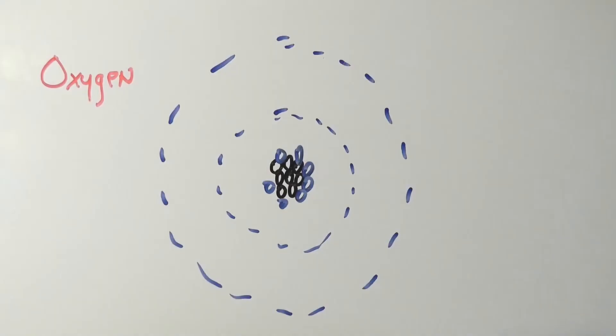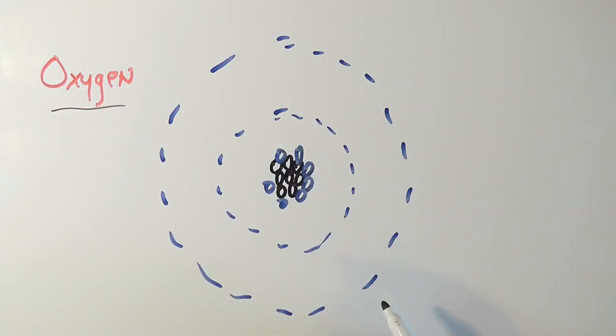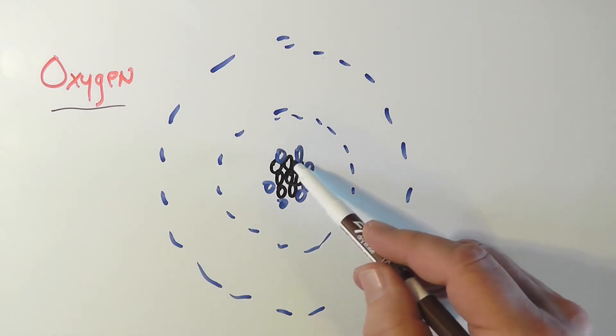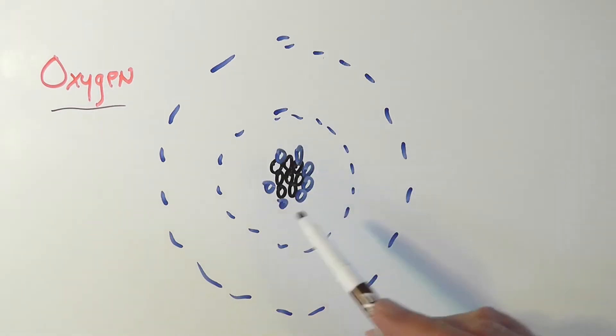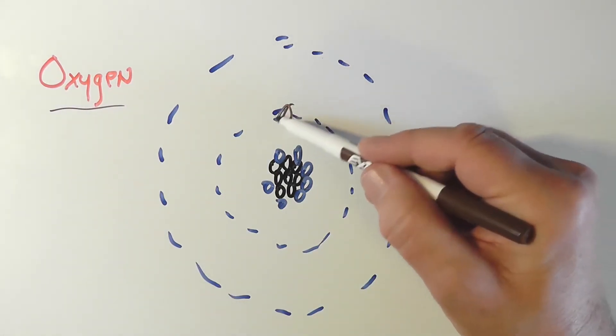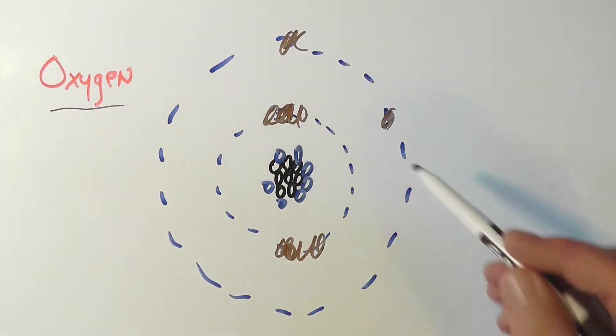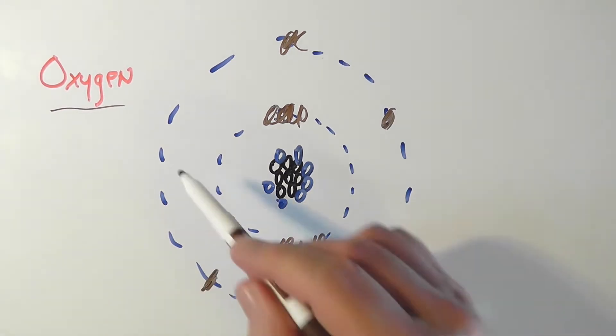Bear with me as I go into a bit of technical detail. This is more depth than is in the book, but it can really help you understand the difference between ionizing and non-ionizing radiation. Let's start by looking at an atom — we'll use an oxygen atom. An ordinary oxygen atom has eight protons and seven neutrons in the nucleus. What we care about are the eight electrons: two in the inner shell, and six electrons in the outer shell.